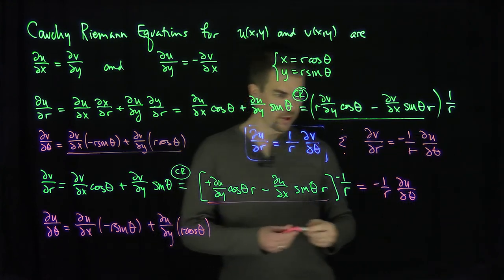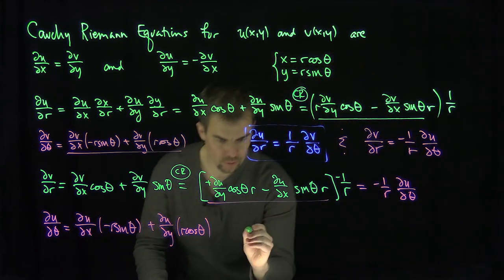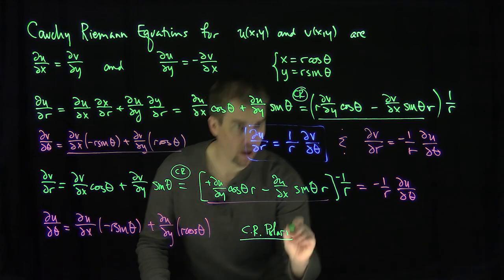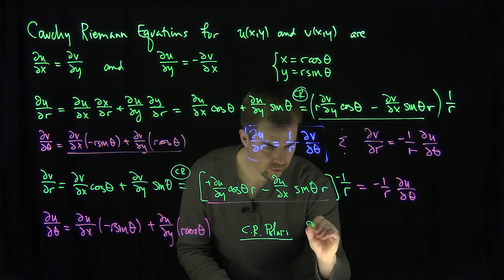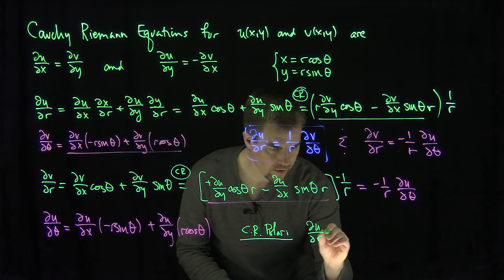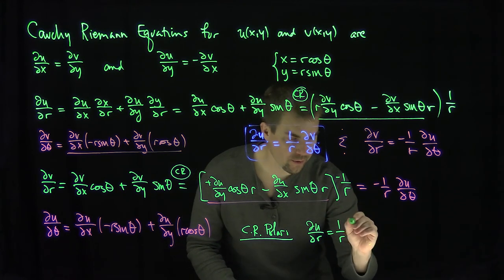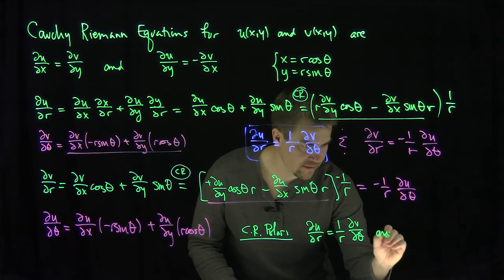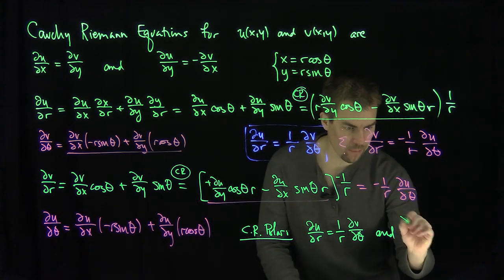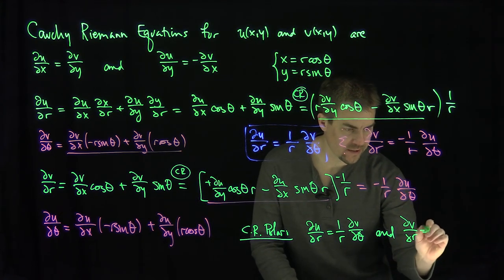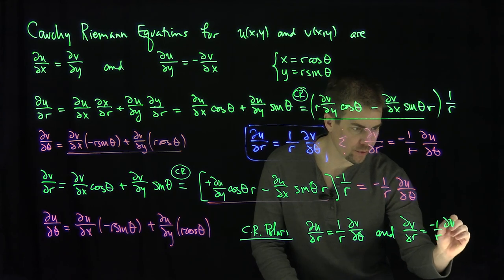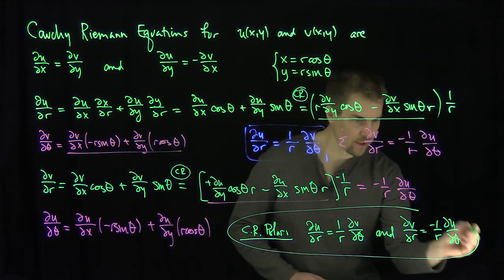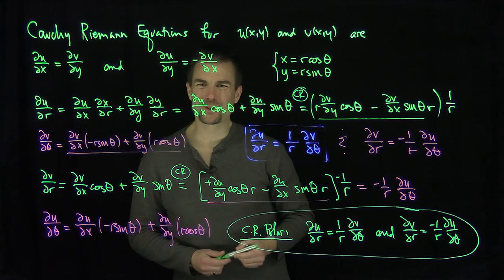So those are our Cauchy-Riemann equations in polar coordinates. The first: partial u partial r equals 1 over r times partial v partial theta. The second: partial v partial r equals negative 1 over r times partial u partial theta. Thank you very much.